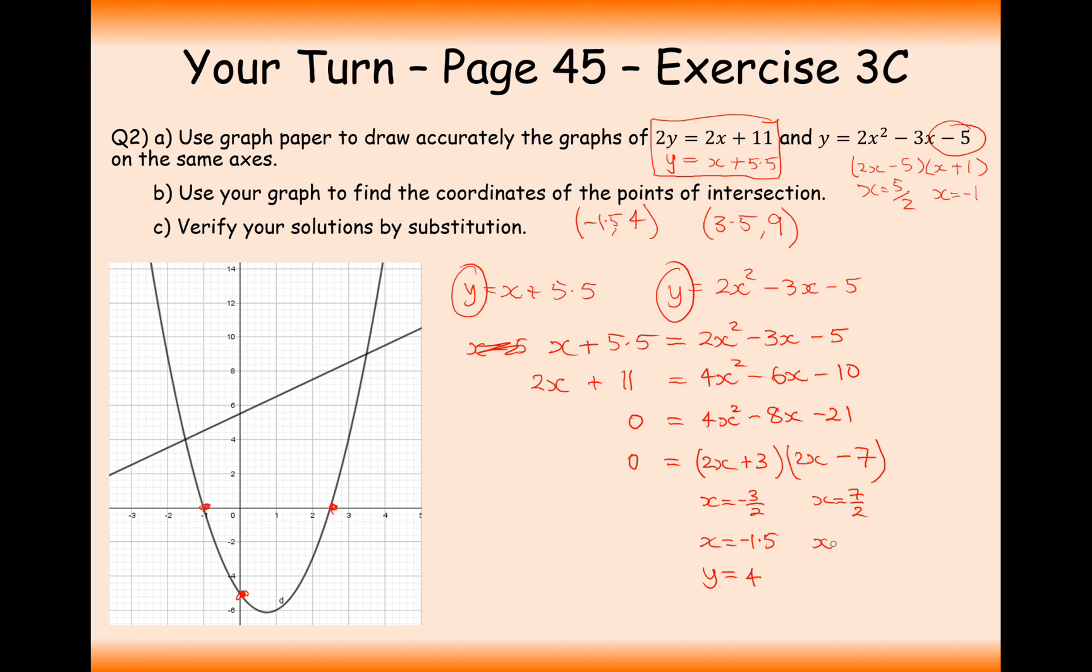And for this one here, x equals 3.5. Sometimes it's easier to think of these as top-heavy fractions, sometimes decimals. In this case, I'm going to go with decimals and substitute that back into one of the equations and we're going to get y equals 9, which is exactly what we wanted for our pair of coordinates.